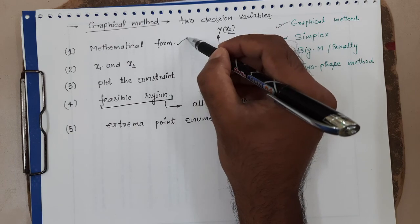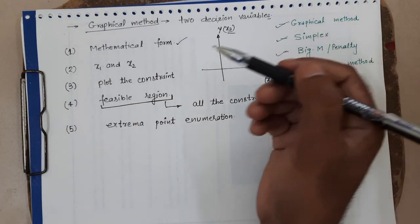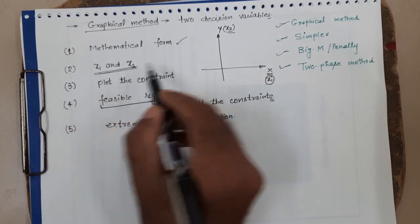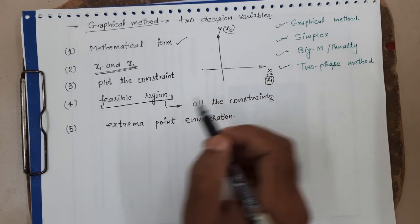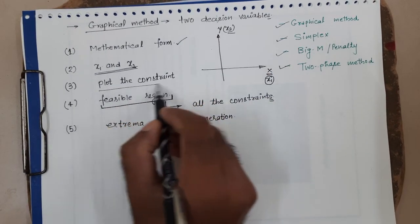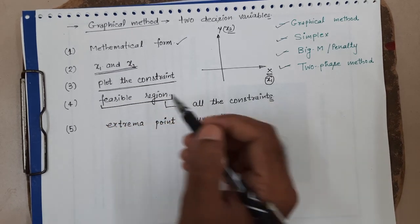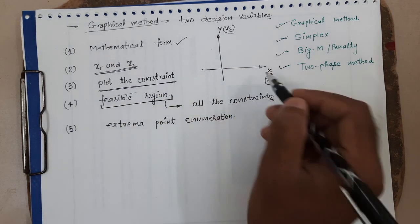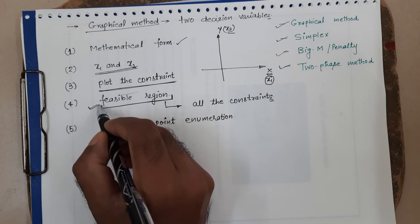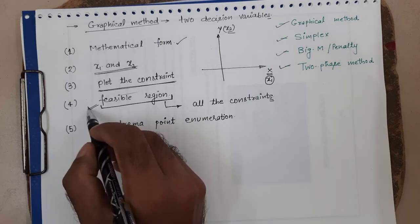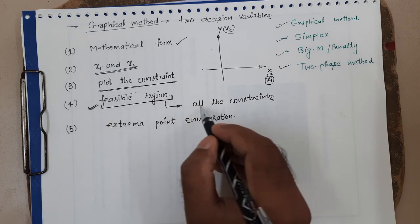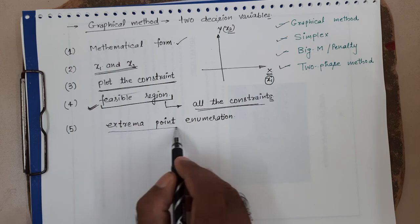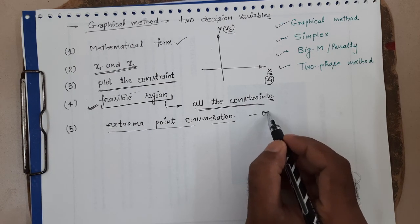So these are the steps: first, write the problem in mathematical form — convert the wording into mathematical equations. Then plot the axes, and on those axes plot the different constraints given in the problem — whether 2, 3, or 4. Finally, find the feasible region that satisfies all constraints simultaneously, and use extreme point enumeration to find the optimal solution.